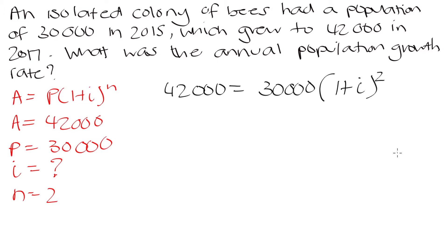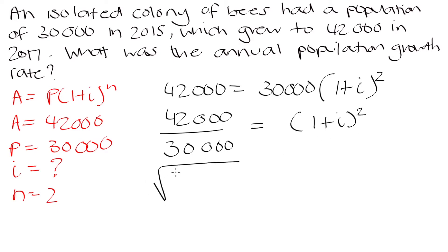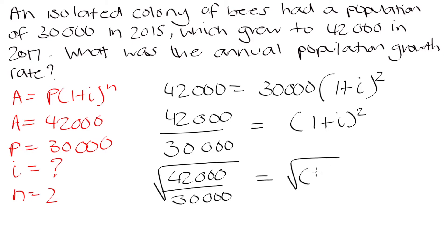To simplify, divide both sides by 30,000, giving: 42,000 ÷ 30,000 = (1 + i)^2. To isolate i, we take the square root of both sides to get rid of the squared exponent: √(42,000 ÷ 30,000) = √(1 + i)^2.